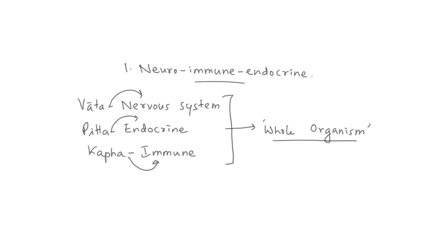This understanding is important because one should not jump to the conclusion that Vata is always equal to the nervous system, or Pitta is always equal to the endocrine system, or Kapha is always equal to the immune system. It is not that way. As I discussed in the last lecture, Vata, Pitta, and Kapha can be interpreted in terms of different entities at different levels — at a single cellular level, at an organism level, at an organ level, and so on. This understanding is essential before we embark upon further discussions.